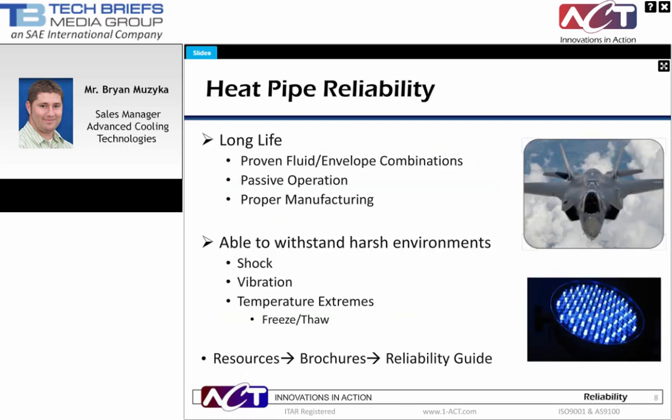One of the more frequent questions on heat pipes is how reliable they can be. Due to heat pipes' passive operation and known compatibility for various fluid and envelope materials, heat pipes provide very long life when manufactured properly. Twenty-plus years of operation is routine for heat pipes. We also need to make sure that the heat pipes can operate in any environment. Heat pipes themselves are thin-walled tubing; however, when integrated properly, they can withstand harsh environments, including requirements such as shock, vibration, and extreme temperatures. Copper water heat pipes are typical for terrestrial applications and have demonstrated the ability to withstand freeze-thaw cycles on their own or when integrated into assemblies such as a high-K plate. We also offer a reliability guide in the resource section of our website.